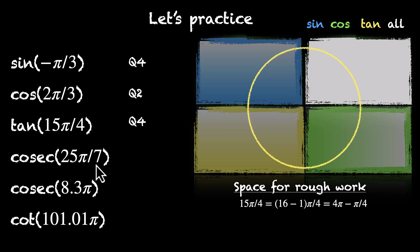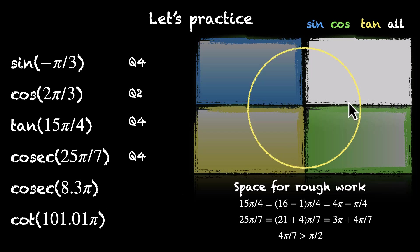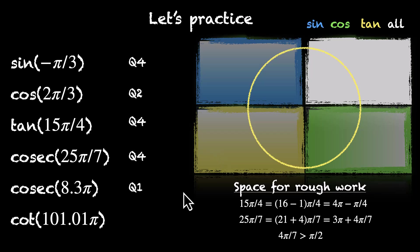What about 25 pi by 7? Dividing 25 by 7 gives 21 plus 4, so we split it as 3 pi plus 4 pi by 7. Now 4 pi by 7 is slightly more than pi by 2, so this lands in the fourth quadrant. What about 8.3 pi? That's 8 pi plus 0.3 pi. 8 pi brings us back to the origin, and adding 0.3 places us in the first quadrant — Q1. Finally, 101.01 pi: 101 is an odd multiple of pi, so 101 pi lands here. Adding 0.01 moves us just into the third quadrant — Q3.